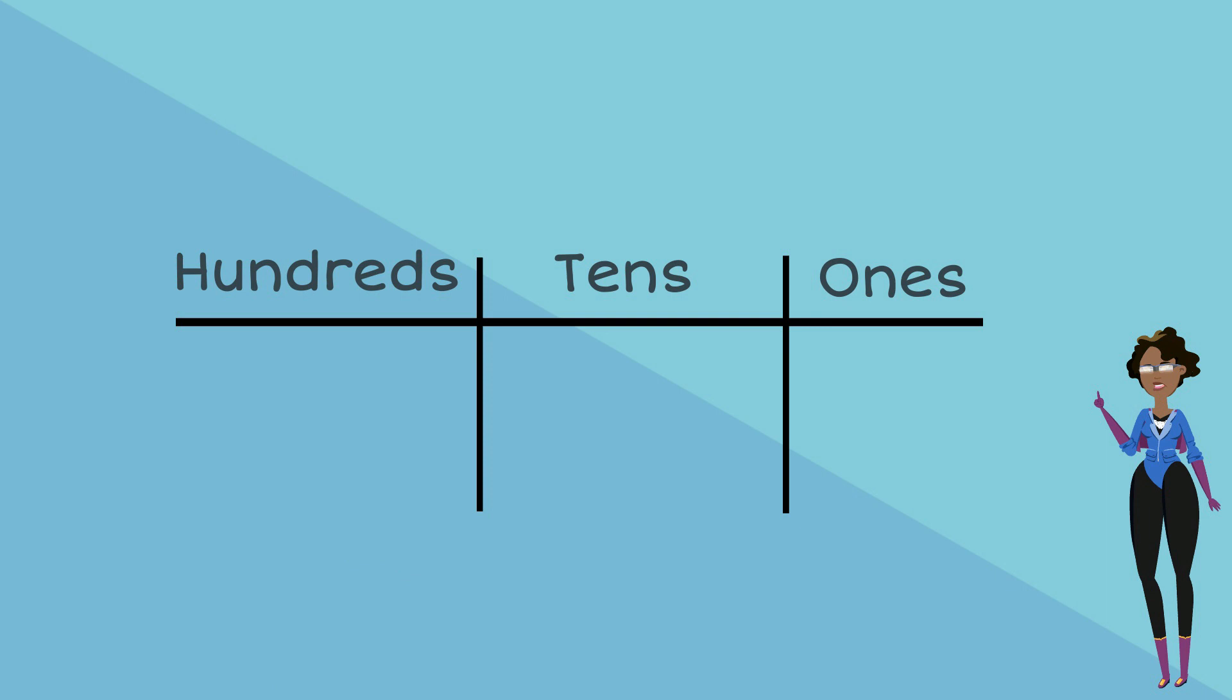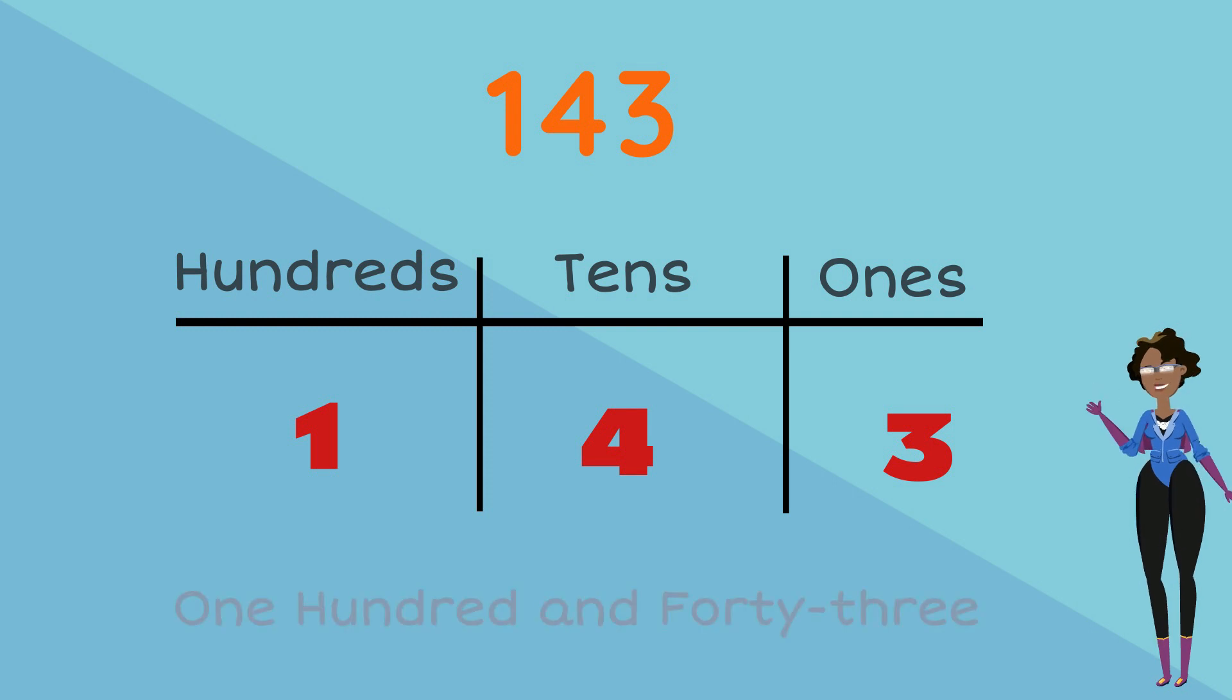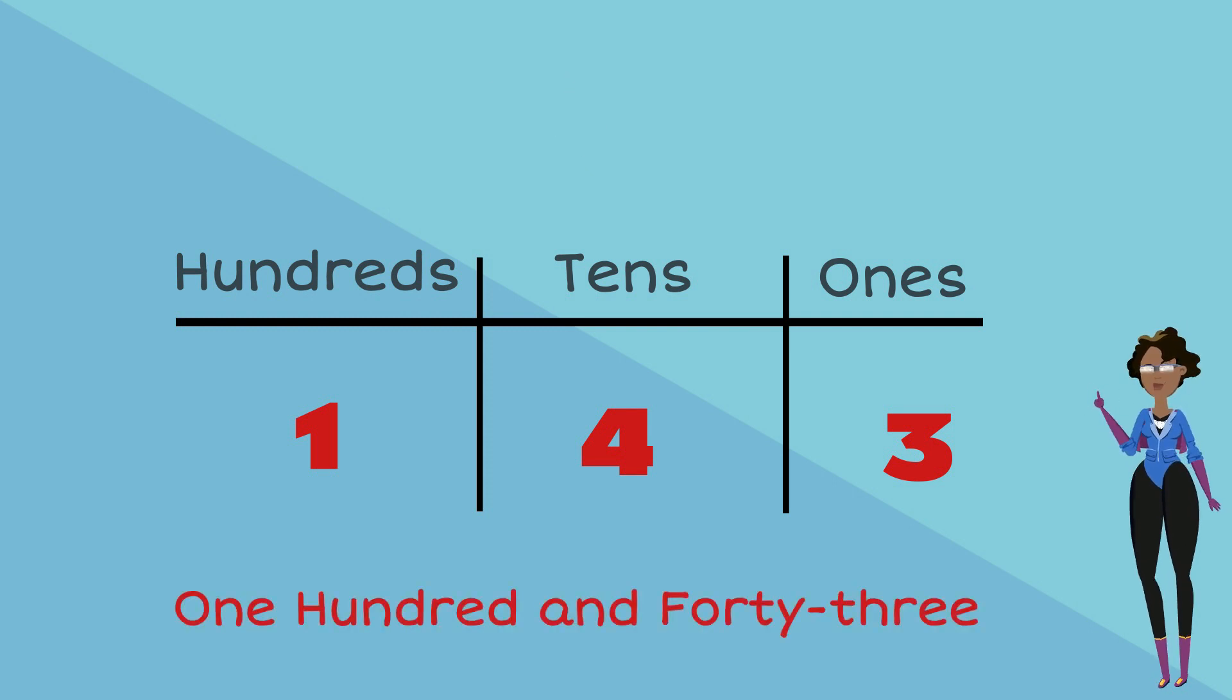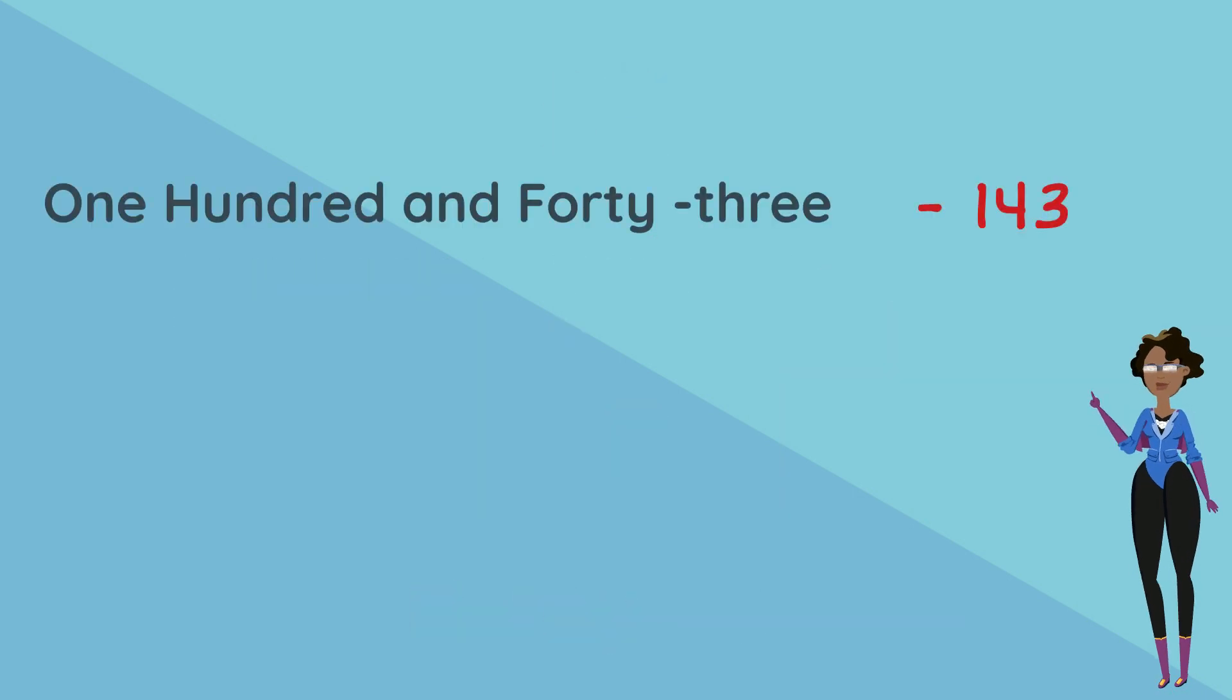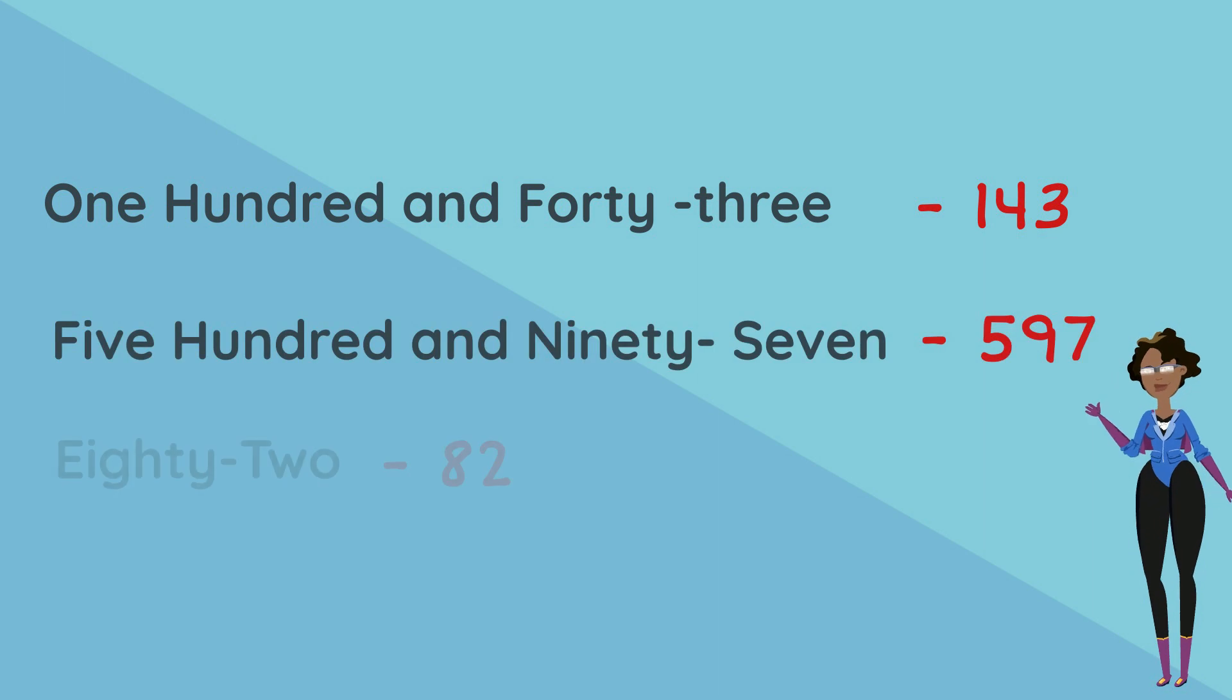The number in the hundreds column is always placed first when writing out the word name. In the first example, we have 1 in the hundreds column, 4 in the tens column, and 3 in the ones column. That leaves us with 143. The second example: we have 5 in the hundreds column, 9 in the tens column, and 7 in the ones column. That gives us 597. And lastly, we don't have any figures in the hundreds column, but we have an 8 in the tens column and a 2 in the ones column, which gives us 82.